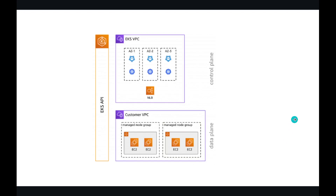On the screen you can see the control plane which is being managed by AWS behind the hood, and this is the EKS VPC which has also been taken care of by EKS — you cannot see this VPC in your AWS account. This is spanned across three availability zones, with two API servers spanned across two AZs, making it highly available by default. This is a customer VPC that the customer will create, shown with two managed node groups created as part of this EKS cluster.